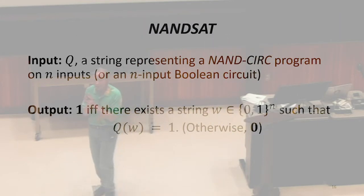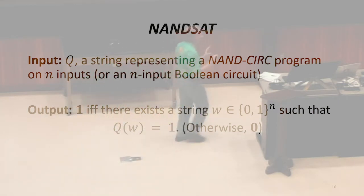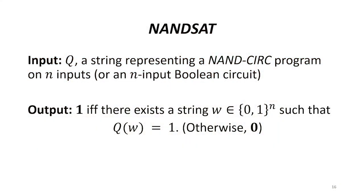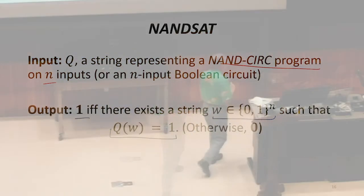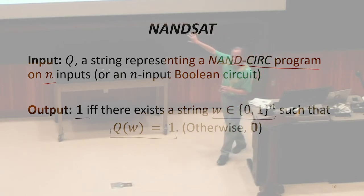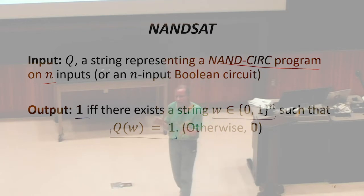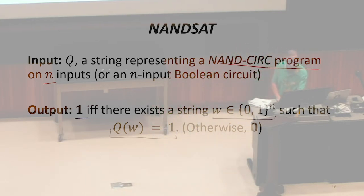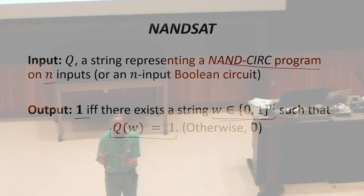The problem we'll call NANSAT. This proof is in the book; we're going to go through what I think is the key insight, not all the technical steps. The input is a NANSERC program that has N inputs. It will output 1 if there is some string of length N such that running the circuit on that string outputs 1; otherwise the output of NANSAT is 0. The name and definition should make you think: this is kind of like 3SAT. In 3SAT there's some assignment to variables that makes the formula true — that's where the satisfiability name comes from. Here, there's some input to this program that makes it output 1.